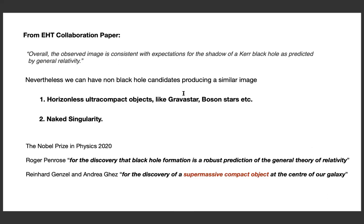If you look at the Nobel Prize 2020 citation for Professor Penrose, it says 'for the discovery of black hole formation as a robust prediction of general relativity' — an unambiguous mention of black hole. But the second half of the prize is quoted as 'for the discovery of a supermassive compact object at the center of the galaxy.' The Nobel committee is careful: theorists say black hole; observers say supermassive compact object.